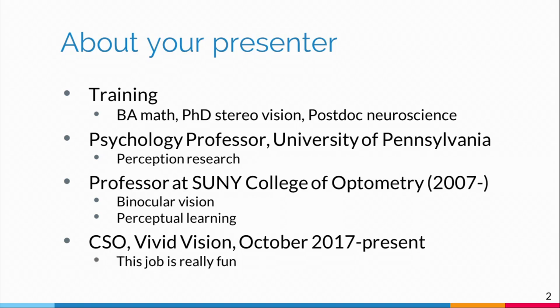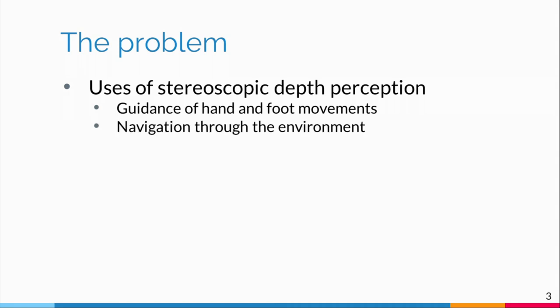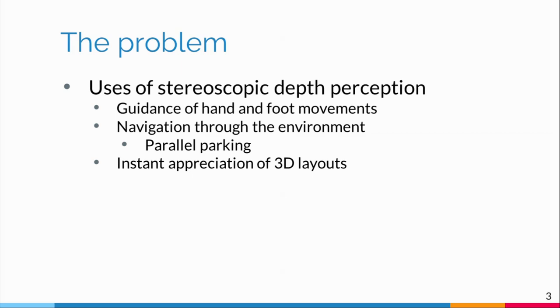Stereoscopic depth perception is actually used by humans for a lot of things — it's not just fun. It's for guiding your hand and foot movements. If you've ever walked around with just one eye, you'll know that you'll step off steps, it's difficult to reach things, you'll overfill coffee cups. It takes a long time to get used to monocular vision if you've had stereo. It's also for navigation through the environment — people who have stereo vision are better at parallel parking, and you instantly appreciate 3D layouts of the world.